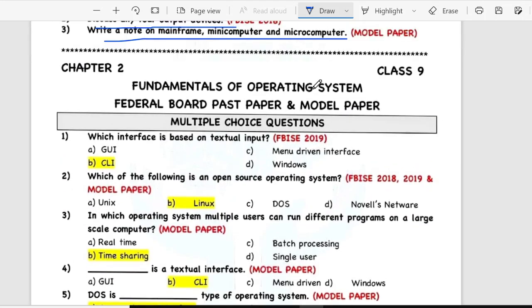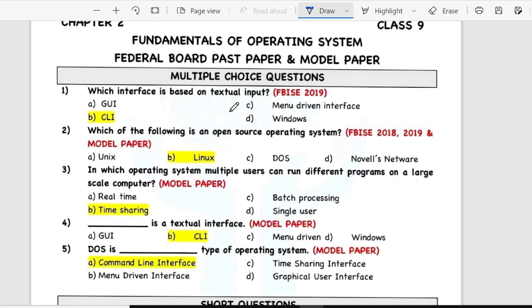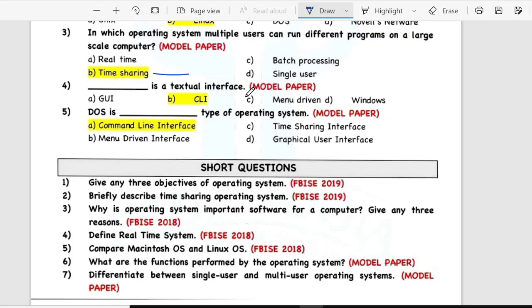Chapter 2 is the Fundamentals of Operating System. Multiple choice question: which interface is based on textual impact? CLI. Which of the following is an open source operating system? Linux. In which operating system multiple users can run different programs on a large scale computer? Time sharing.